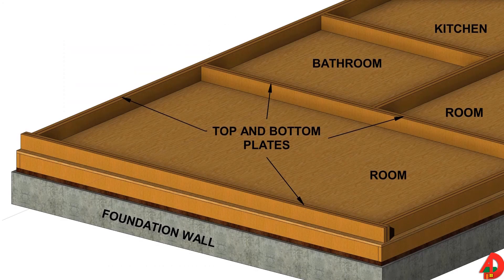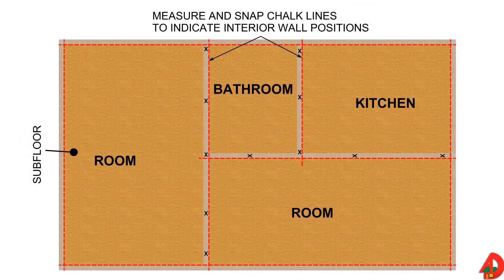After the lines are snapped, the top and bottom plates are cut to length and placed next to each other by the chalk line and temporarily nailed together. Dashed lines show where each wall will be placed using measurements from the floor plan. On job sites, these lines would be snapped using a chalk line. The X marks on one side of the interior wall lines show the sides of a line where the wall is to be placed.